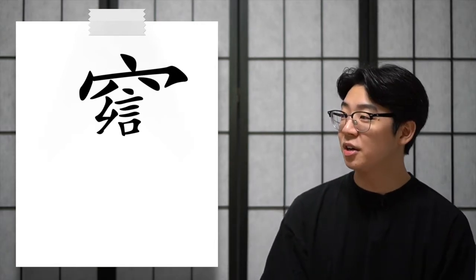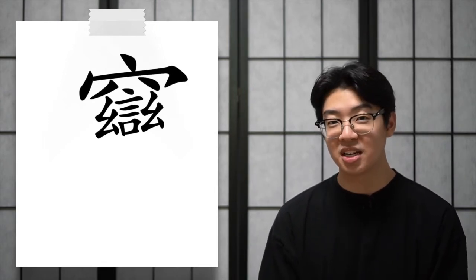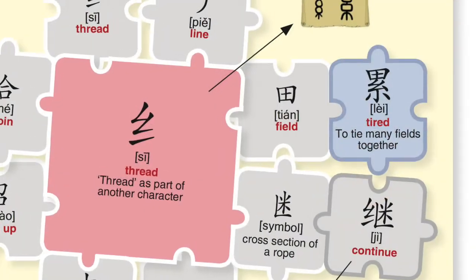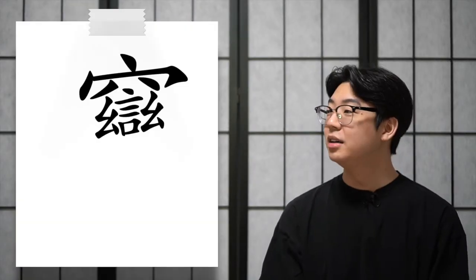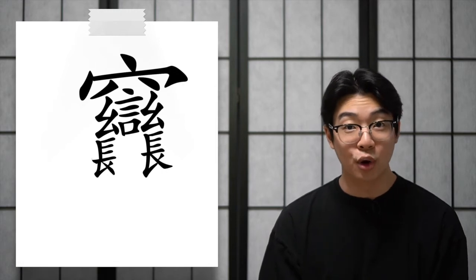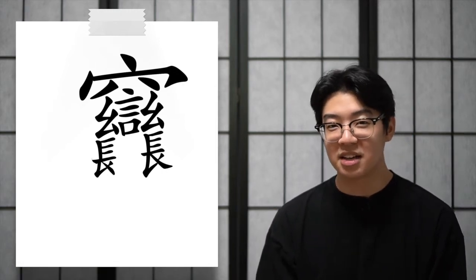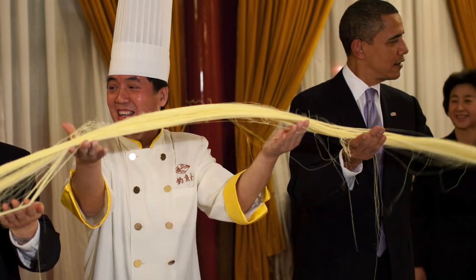The next character on each side means small. This is represented by drawing some thread or string that is twisted into a bundle. This is more visible when looking at the ancient version of the character. Below the bundles of string, we have a character that means long or grow. If you look at the ancient character, what you're really drawing is a person with long hair. And guess how noodles are made? By elongating strings of dough.